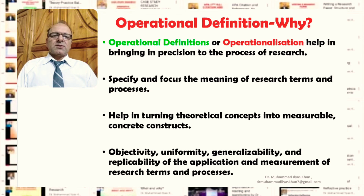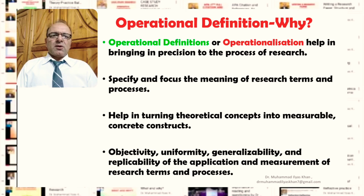In our particular context, objectivity means that the operational definition makes the process and product of the research more objective. Uniformity means that the same construct is used throughout the research project and may be generalizable to other similar research contexts, so that if other researchers want to replicate the research process, the operational definitions will support that. So operational definitions bring in objectivity, uniformity, generalizability, and make replicability of the research product and process possible.